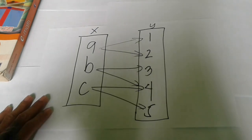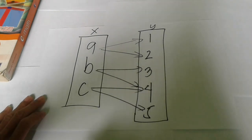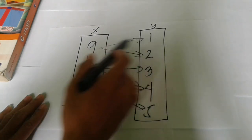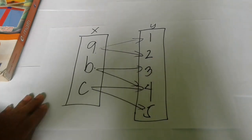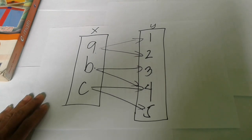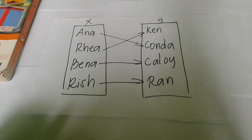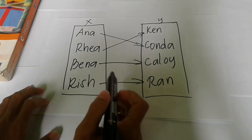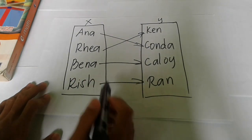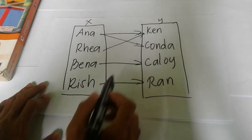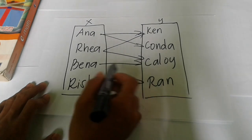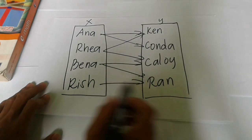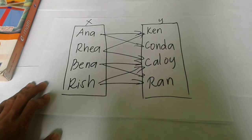If you write it as ordered pairs in Cartesian product form: (A,1), (A,2), (B,3), (B,4) — notice multiple arrows going out from one element. For the real-life example: Ana is with Onda and also with Ken, Reya is with Ken and Kaloy, Bena is with Kaloy and Ron, and Rish is with Ron and Kaloy. That's a one-to-many relation.